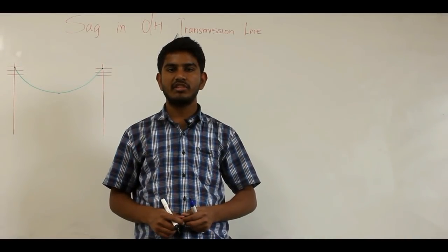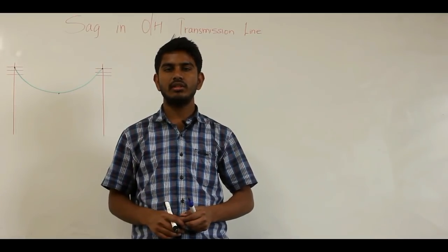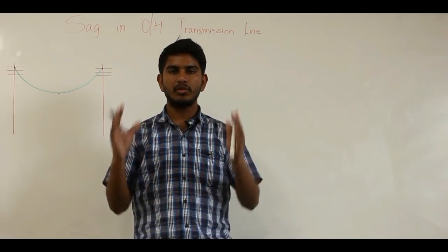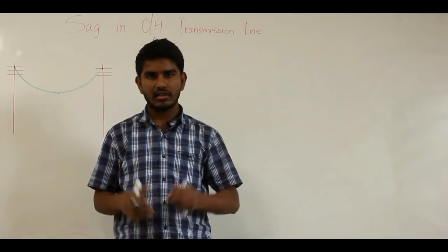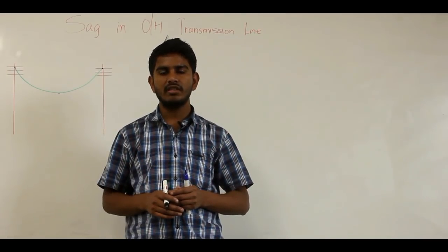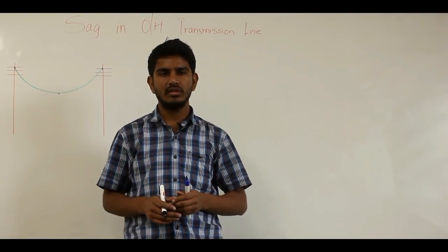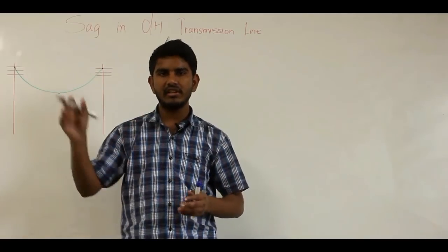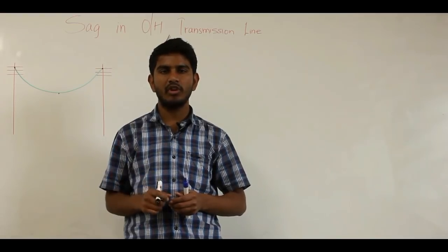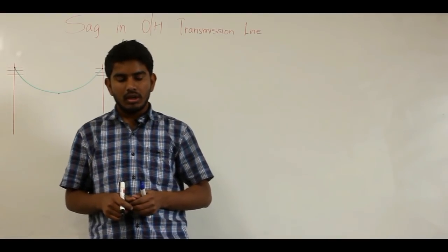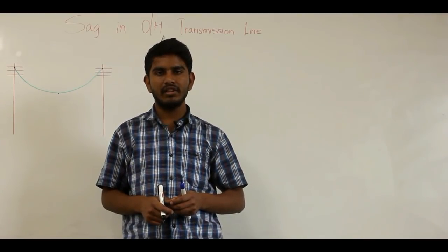In this video let us discuss about sag in overhead transmission lines. You might have seen while passing along roads that conductors are suspended between two supporting structures — transmission towers. You might have wondered why this suspension is made, because it increases the conductor material and decreases the ground clearance, that is the clearance between the lowest point of the conductor and the ground. Let's discuss the purpose of this suspension and how it helps in the design of overhead transmission lines.